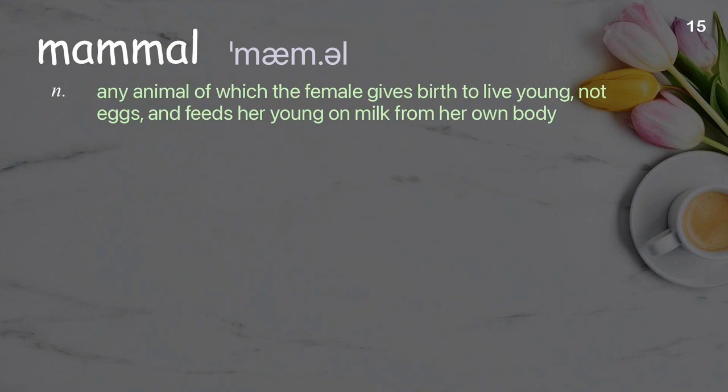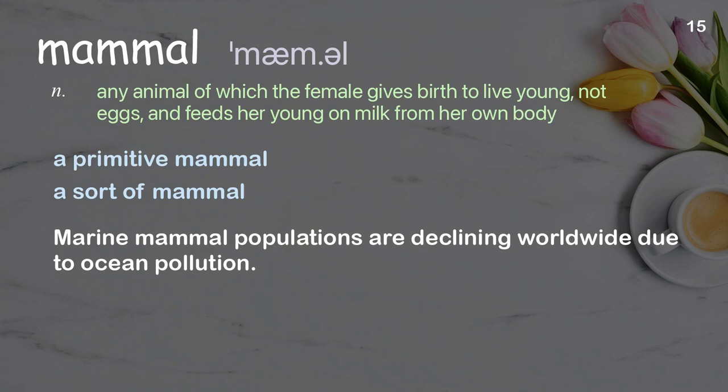Mammal: any animal of which the female gives birth to live young, not eggs, and feeds her young on milk from her own body. Examples: a primitive mammal; a sort of mammal; marine mammal populations are declining worldwide due to ocean pollution.